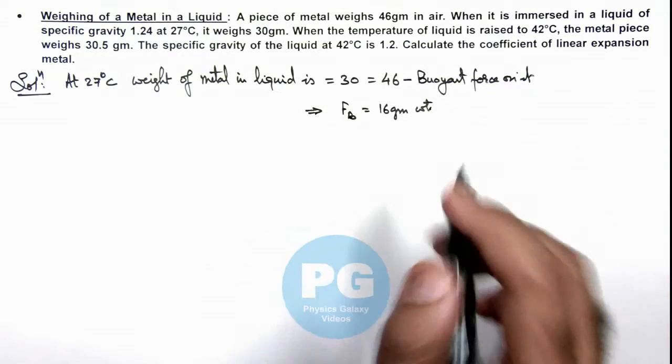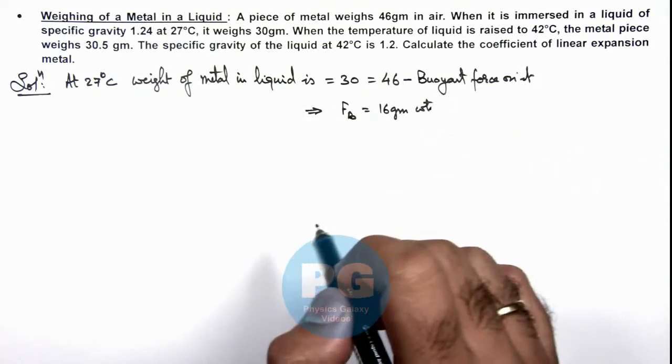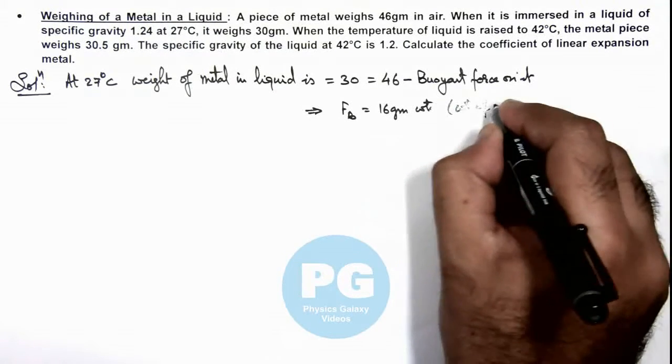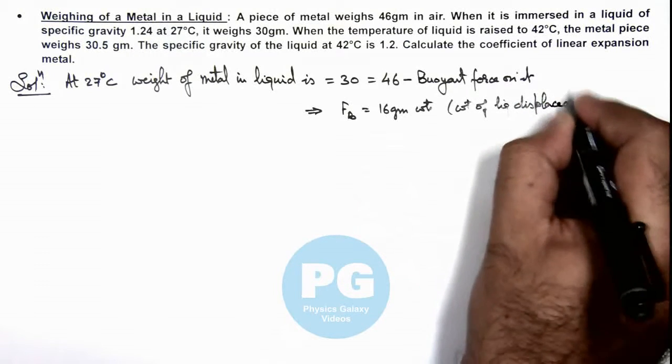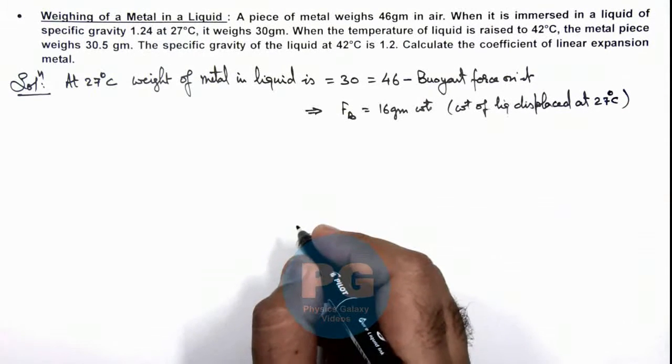Because 46 minus buoyant force will be the effective weight in liquid, and this buoyancy force can be written as weight of liquid displaced at 27 degrees Celsius by the metal.